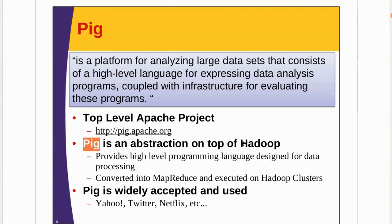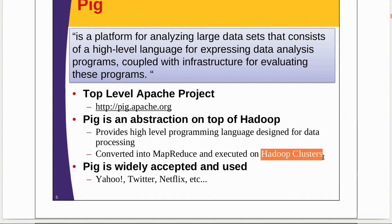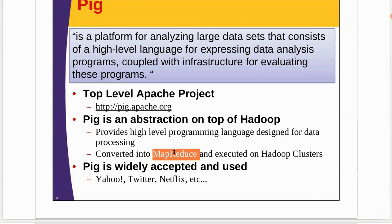Why do we need Hadoop to run PIG scripts? Your PIG scripts are converted into MapReduce jobs, and these MapReduce jobs are executed in the Hadoop clusters. You write your PIG script; it gets converted into a MapReduce program behind the scenes — you are not writing any MapReduce program yourself. How many MapReduce jobs are created depends on the query you write; at least one Map and one Reduce will be created, sometimes two or more.